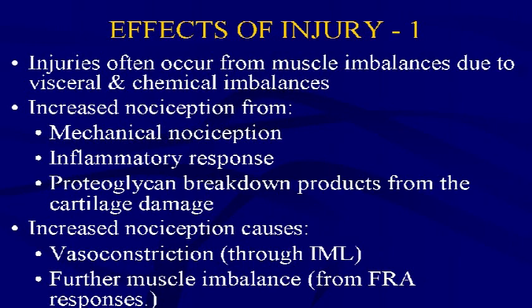Increased nociception from mechanical sources, the inflammatory response, and proteoglycan breakdown products from cartilage damage all bombard the nervous system. GAGs or proteoglycans, when they break down, their breakdown products can actually stimulate nociceptors, so joint damage — especially cartilage damage — adds to the nociceptive barrage and furthers nociceptive withdrawal reflexes and downstream autonomic effects.